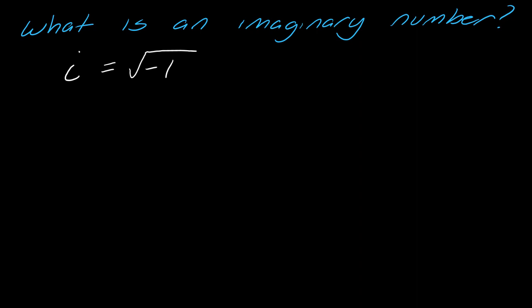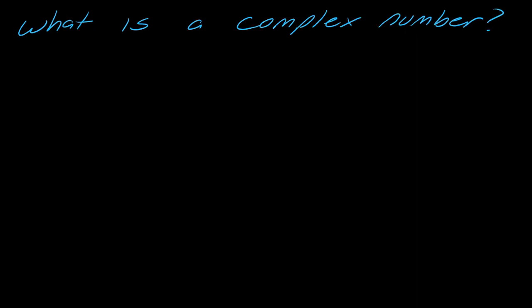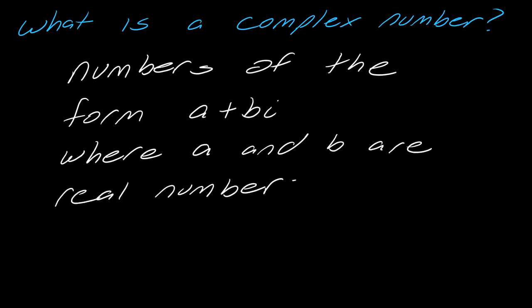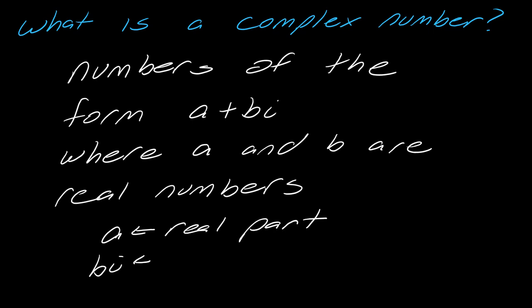Imaginary numbers open up a new number system called the complex numbers. Complex numbers are numbers of the form a plus bi, where a and b are real numbers. Here, a is called the real part, and bi is called the imaginary part.